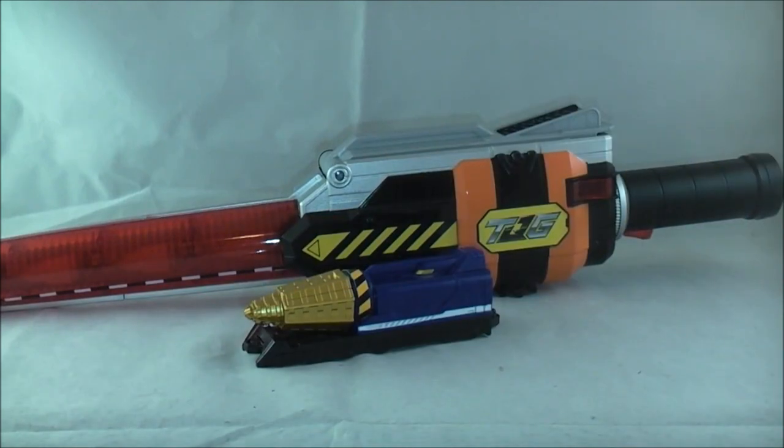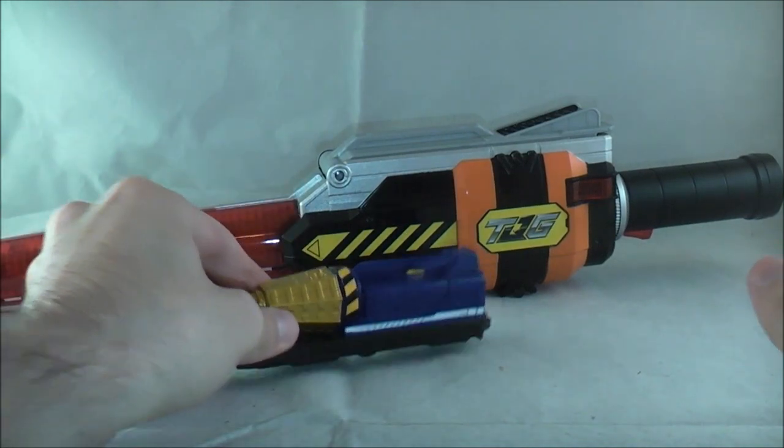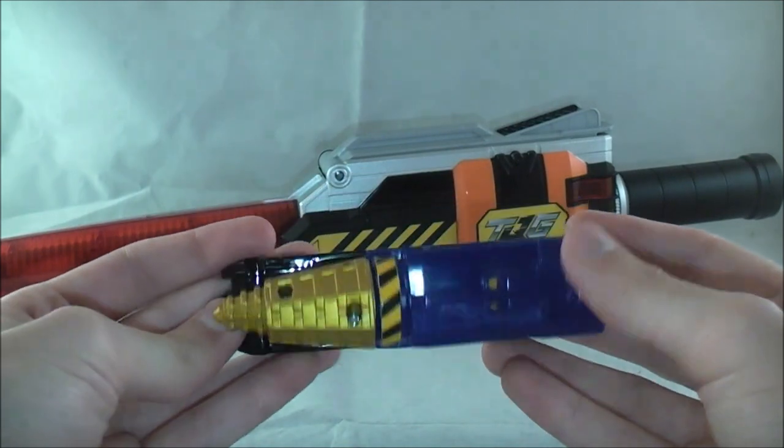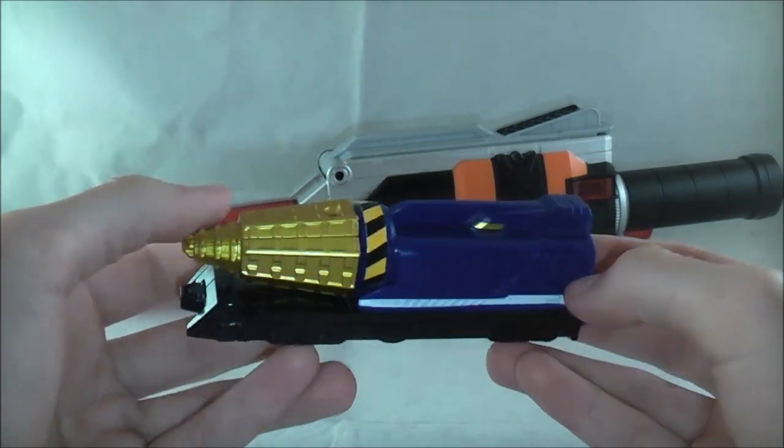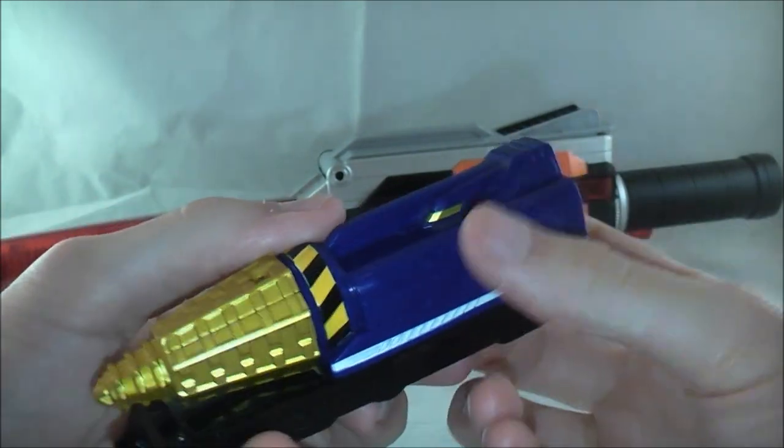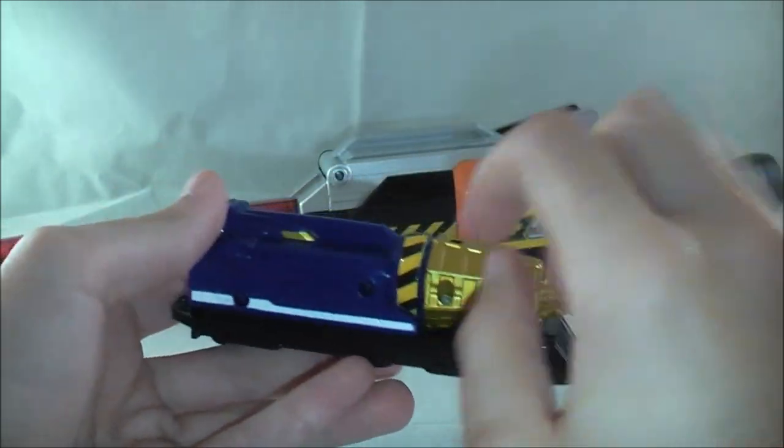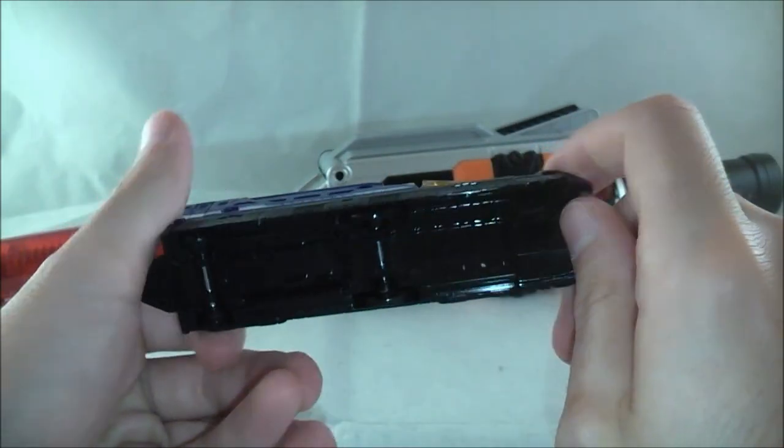All right, so here we have the Yudo Breaker and the Drill Resha it comes with. Just in case I do not forget in any way, let's just take a look at the Drill Resha. This is honestly a pretty basic Resha. It's really boring looking. There's really not a lot to it. It's primarily blue here, then you got the golden drill. Maybe a little gold here. Pretty boring.